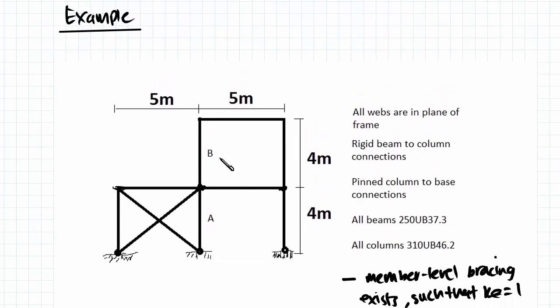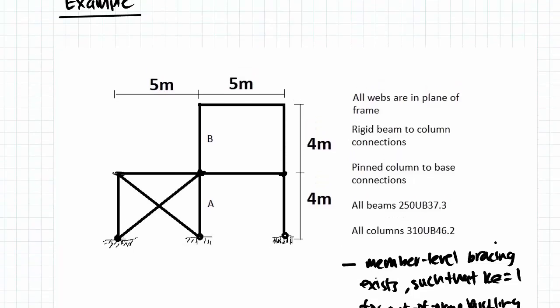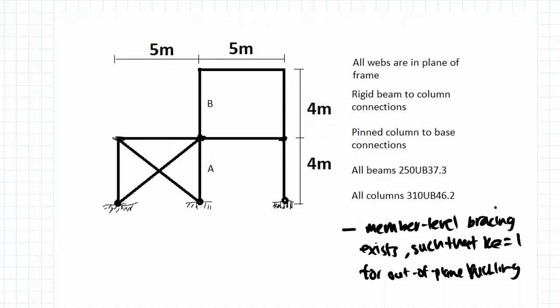We're going to be finding the capacities of our columns and we're going to actually be finding the effective lengths ourselves manually. And then from that we'll be able to solve for our design member capacity.